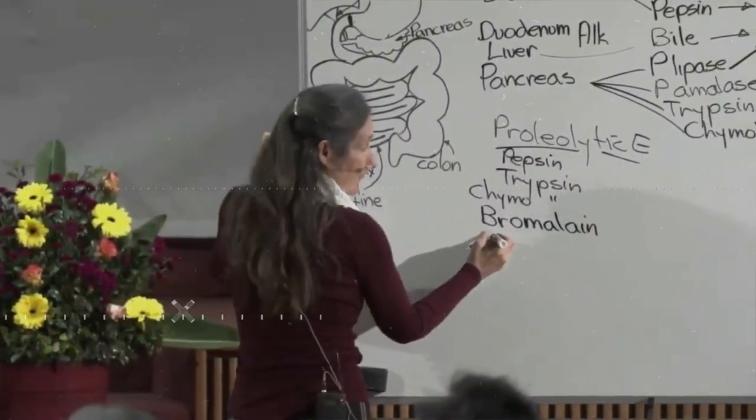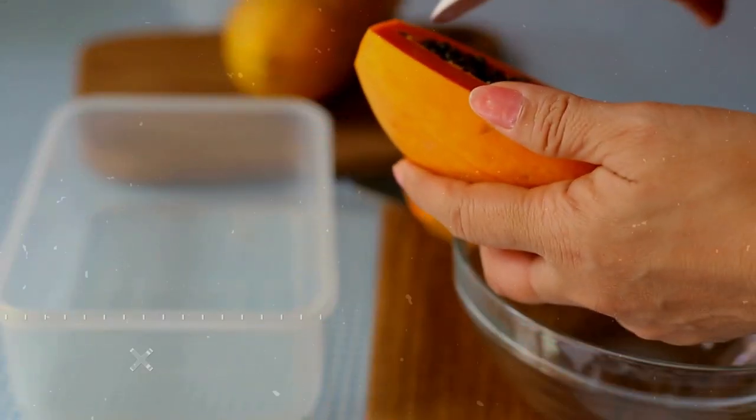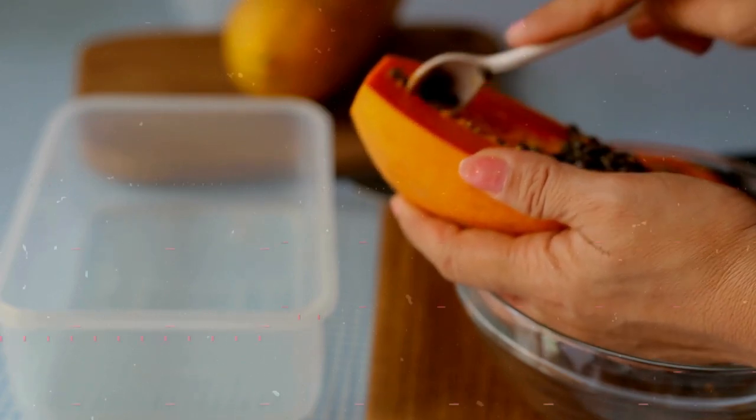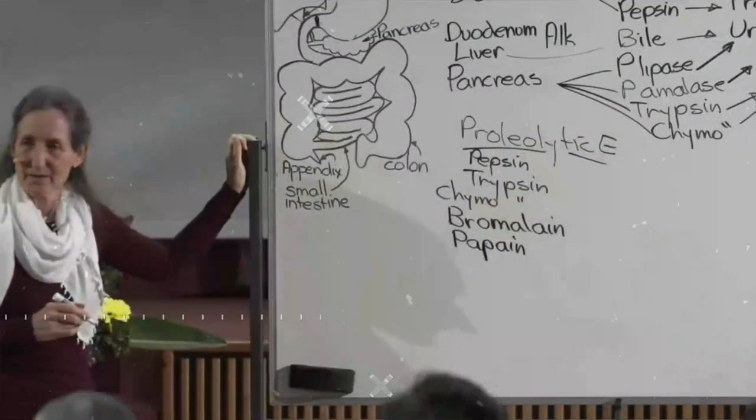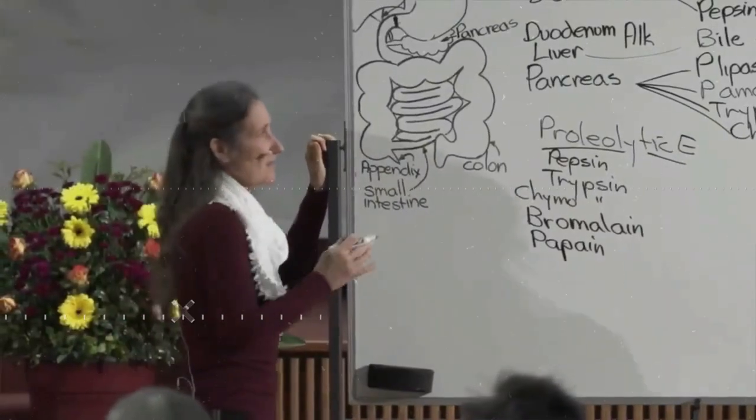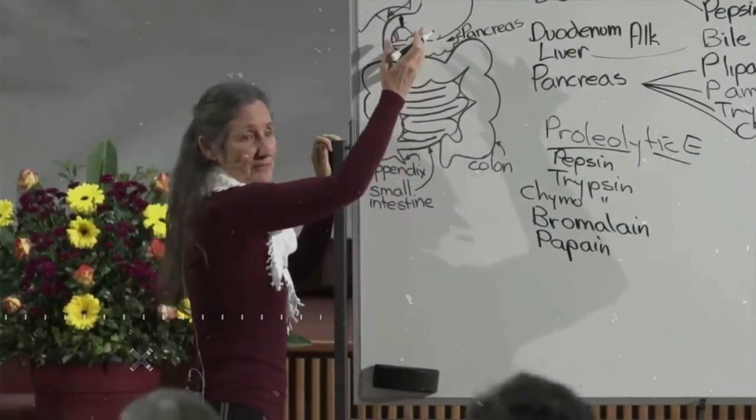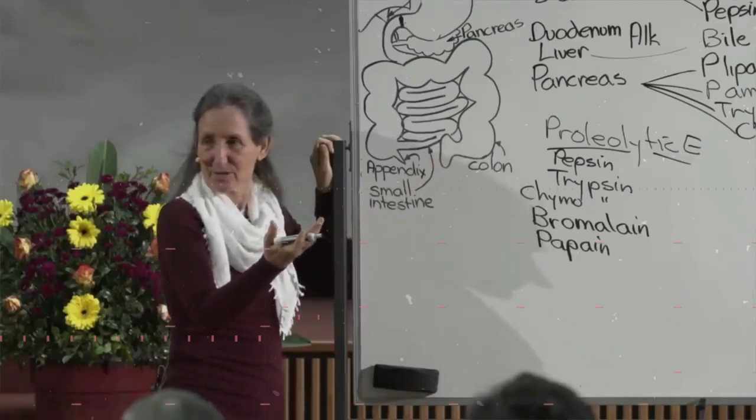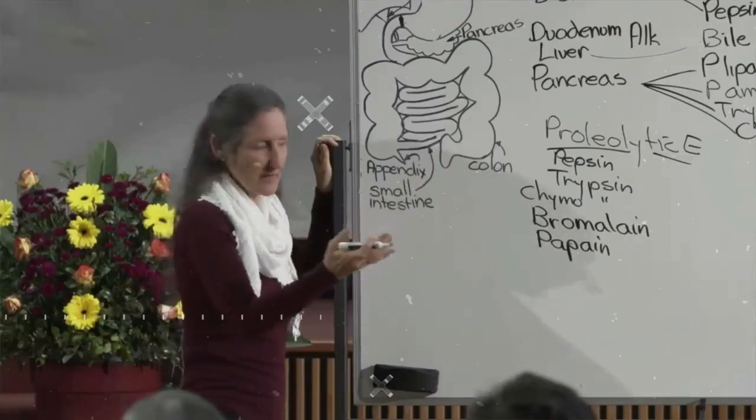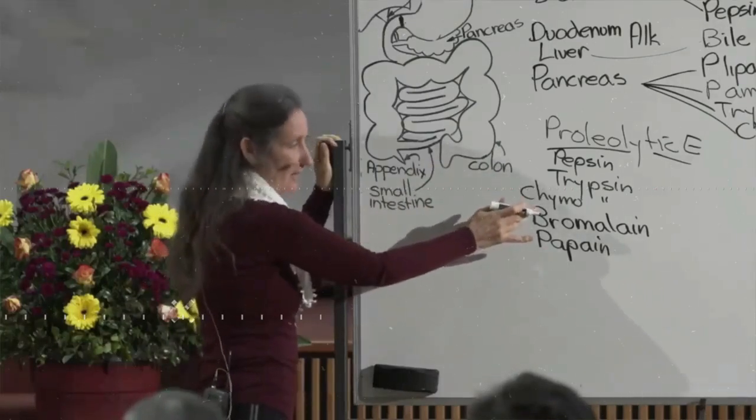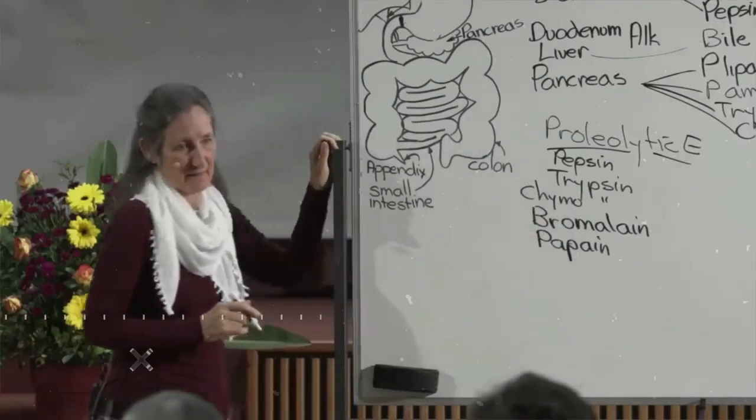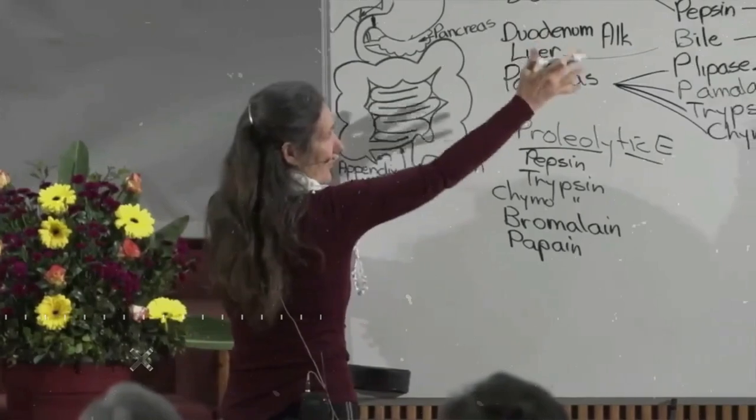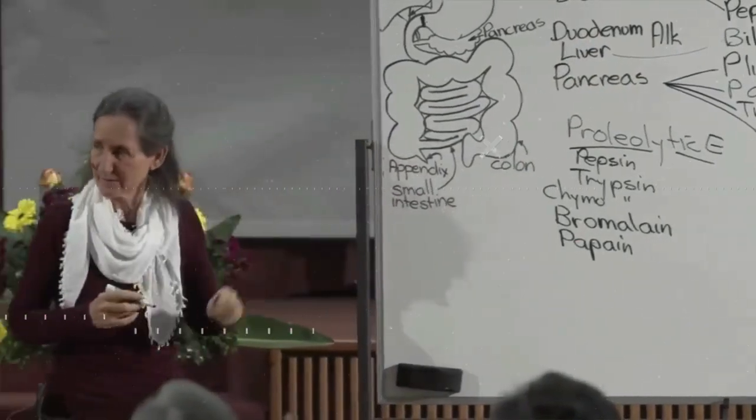And from the papaya or the pawpaw, papain can be extracted. And it is a proteolytic enzyme. So if someone has pancreatic problems, you can buy them from the health food shop. They're often called digestive enzymes. And they contain bromelain and papain, which are proteolytic enzymes, which can help in the final breakdown of the protein.